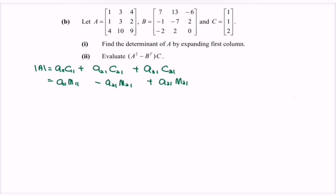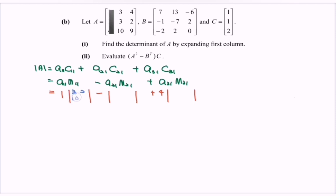Referring to matrix A, A11 equals 1, then negative 1, then positive 4. For the minor M11, close up row 1 and column 1, giving us 3, 2, 10, and 9. Close up row 2 and column 1, giving 3, 4, 10, and 9. Close up row 3 and column 1, giving 3, 4, 3, and 2.